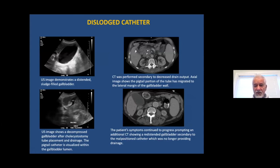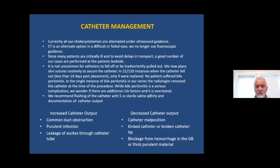Other complications include the pigtail migrating partly or completely out of the gallbladder, as we have discussed — and we have also discussed what to do when the catheter has migrated totally outside or is still partially inside.